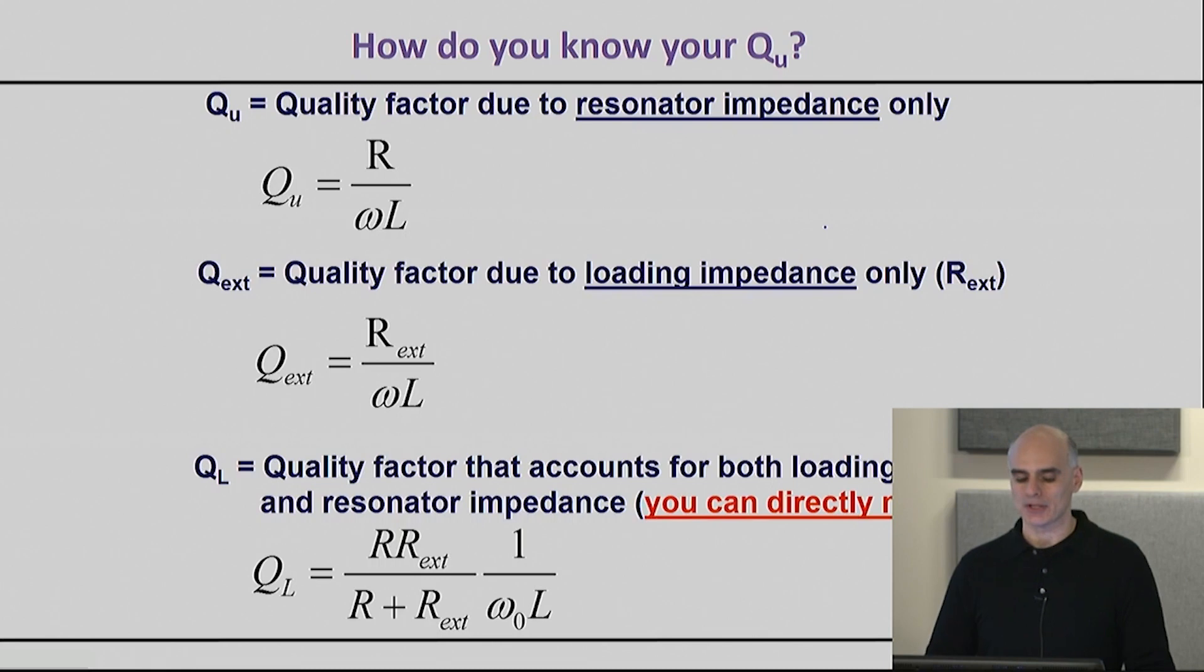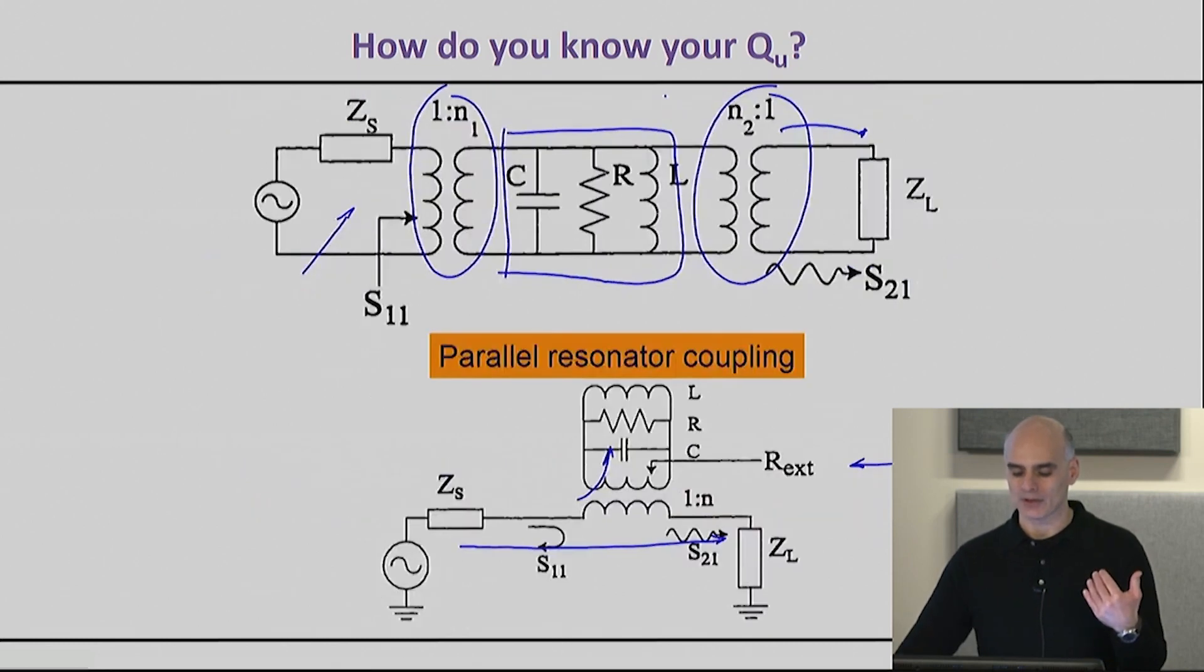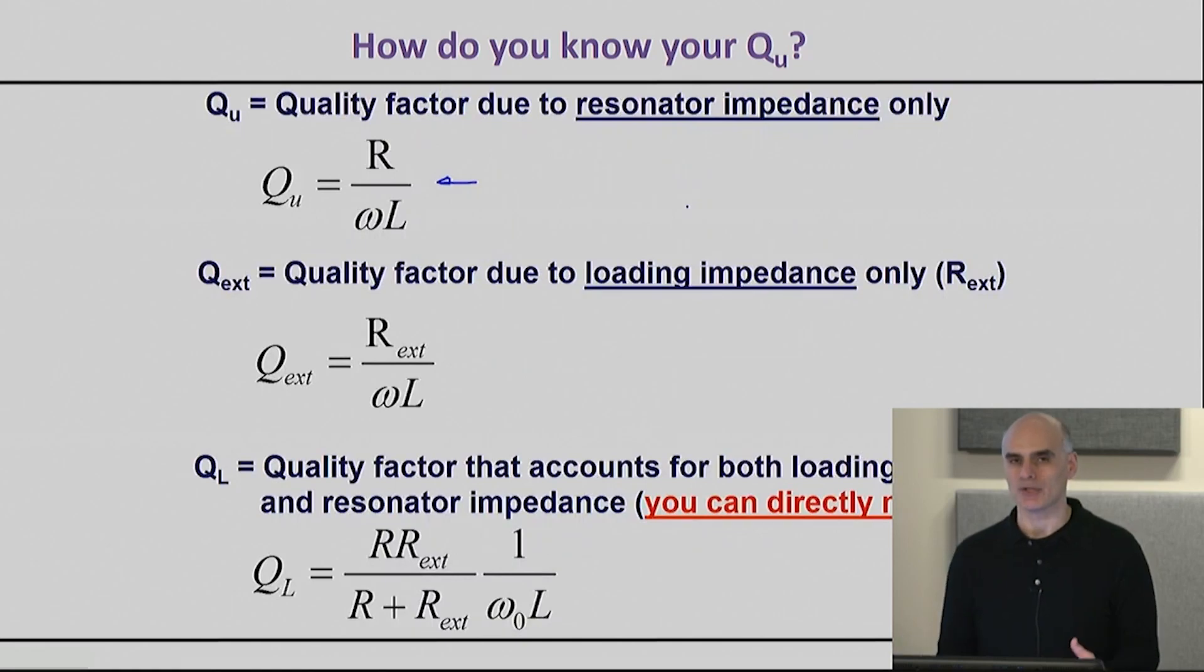In order to derive some equations that we can use to compute our coupling and the quality factor, it is important to very clearly define in our minds the three different quality factors that we have. The first one is the unloaded quality factor, which simply measures how much energy is being lost in the resonator itself. Naturally, it should really depend on just the resistance of the resonator itself, and indeed, if you could ideally measure this quality factor, you would get the equation you see right here—it only depends on the resonator resistance itself.